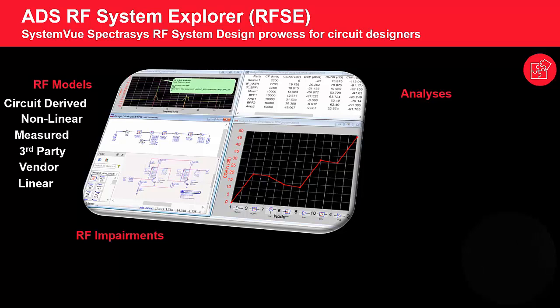RFSE has access to many of the RF system models that are in SystemVue Spectrasys. It also has the ability to capture an RF system-level representation of your circuit — for example, a power amplifier or mixer — and then bring that into the RFSE environment to look at link budget analysis. Some of the measurements you can do are RF impairments, spurious analysis, mismatch analysis, noise, and distortion.